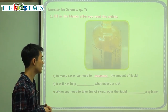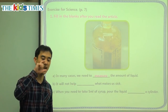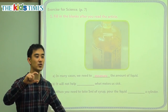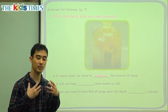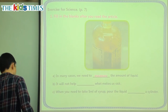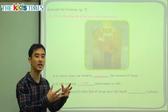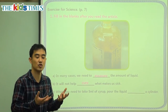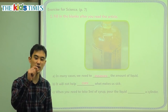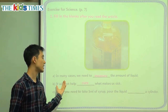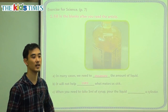Question B: It will not help blank what makes us sick. We have to drink exactly 10 milliliters. If we drink 20 or just 1, it will not make us healthy. It will not cure what makes us sick. Curing means to make someone healthier — to make them strong again, to fix their sickness. So if we drink too much or too little, it will not help cure or fix what is making us sick.